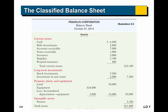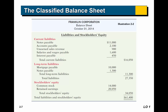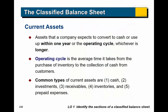Here's a classified balance sheet. The assets section is broken down into current assets, long-term investments, property plant and equipment, and intangible assets. The liability section is broken down into current liabilities and long-term liabilities, and then there's stockholders' equity.